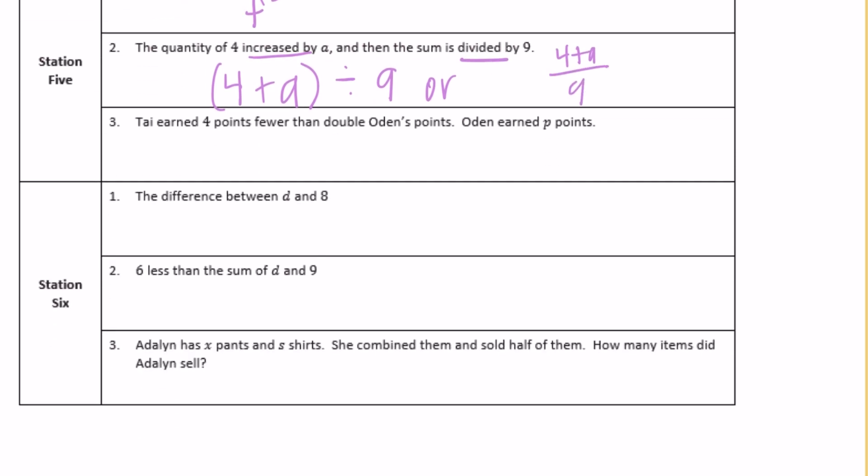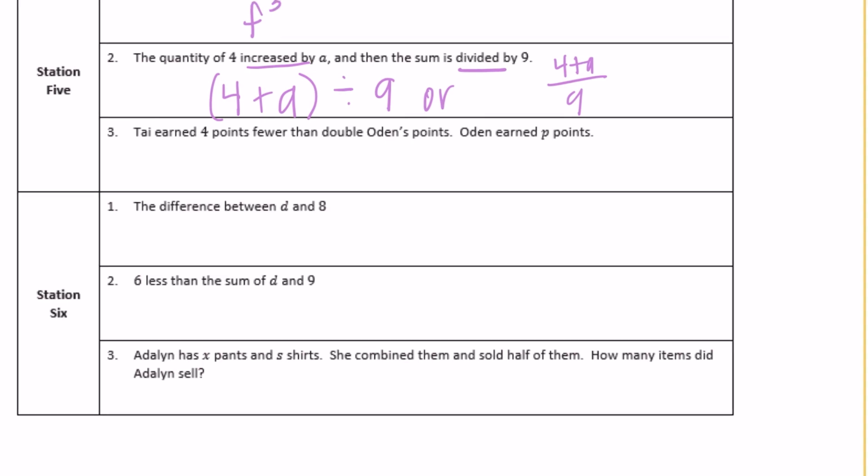Number three, Tay earned four points fewer than double Odin's points. Odin earned p points. Four points fewer means minus 4 from whatever we get. Then double Odin's points, so 2 times p minus 4: 2p minus 4.